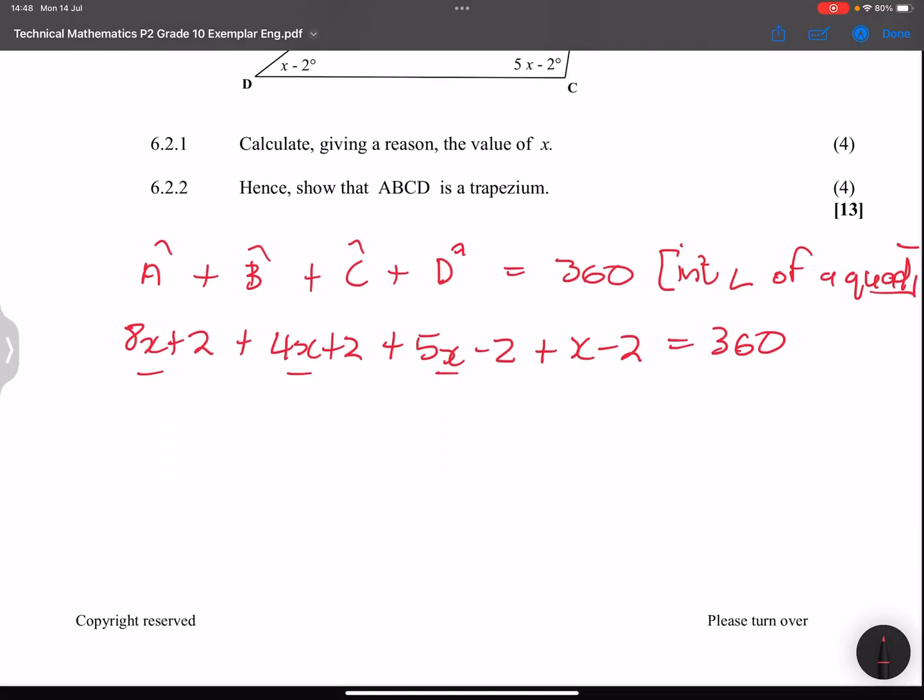Right, so let's take all the like terms. So we've got 8x, 8x plus 4x, which is 12x, plus 5x, that's 17x, plus x. So that gives me 18x. So we've added those 2 plus 2, minus 2, minus 2. So those actually cancel each other out. So 18x is equal to 360. And if I divide both sides by 18, and it looks like this is going to give us 20.